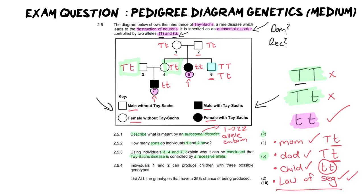And by the way, a top tip for everyone, you should be using your exam guideline to define the law of segregation, because that is what they expect you to use in the final exam, not what's in your textbook, not what you might have written down in your notes. Now, last but not least, for number four, it says individuals one and two can produce children with three possible genotypes. This is interesting information. And it is true. They can do that. List all the genotypes that have a 25% chance of being produced.